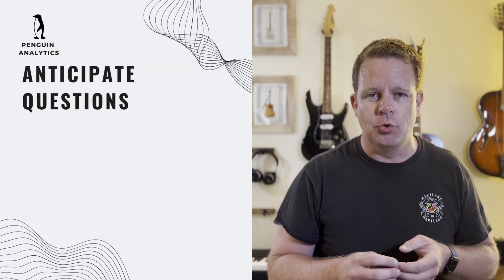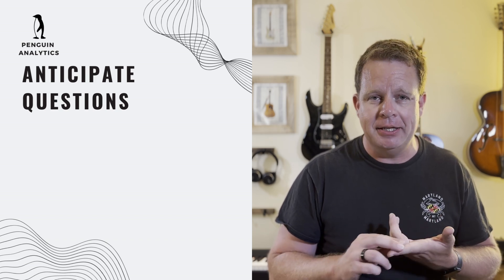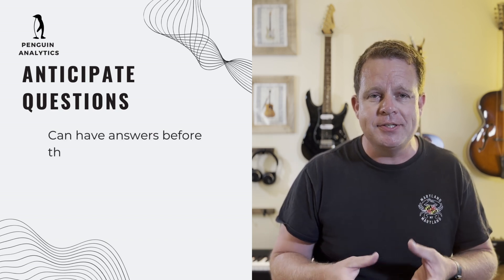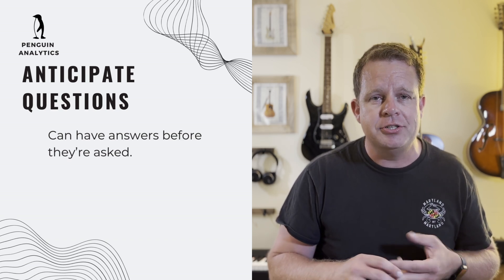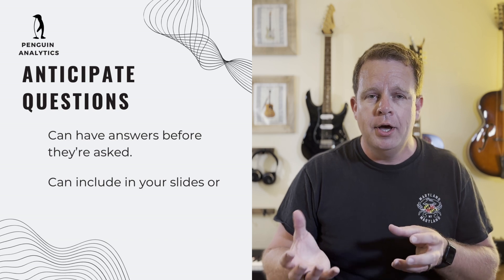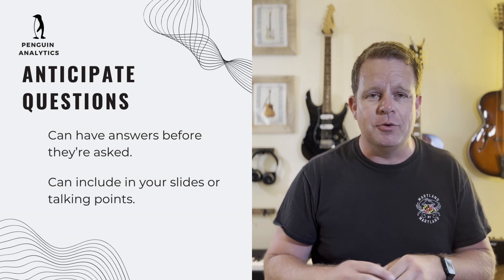You want to anticipate any questions your audience is going to have. You can do two things: have the answer ready off to the side so you can share it when needed, or head off the question by including the information in the presentation or addressing it in your talking points. Either approach is effective. Having that information to hand makes it clear that you've done your homework, you understand what you're talking about, and you've given a lot of thought to the problem — which builds trust and makes your audience keener to take the actions you recommend.